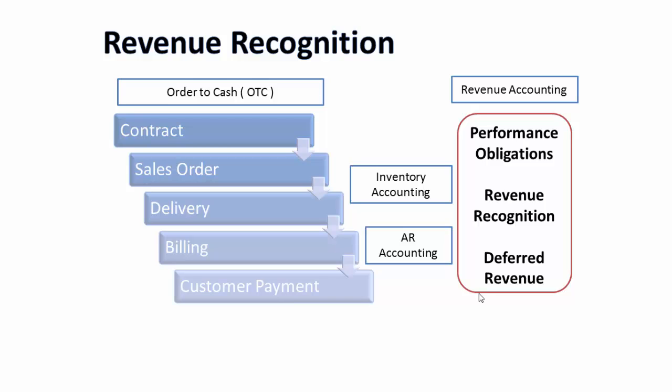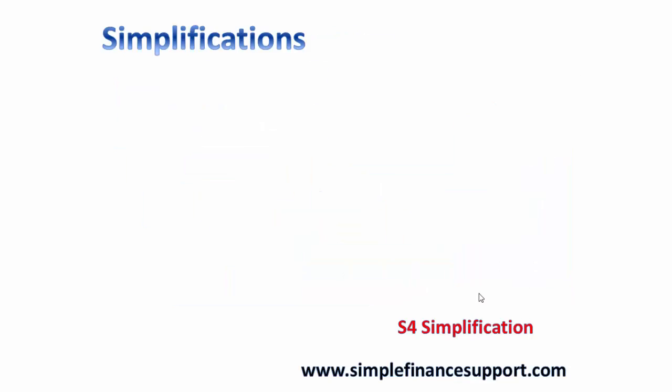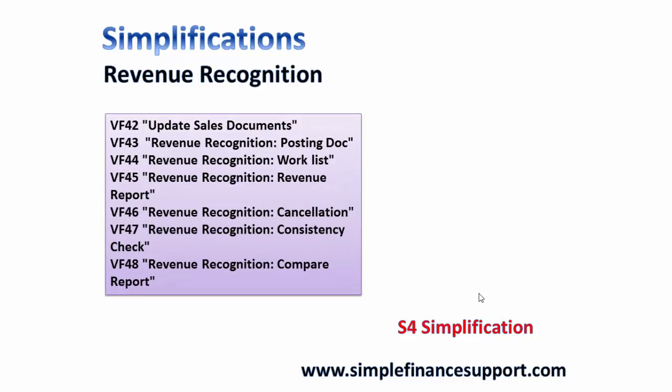This entire revenue recognition activity in SAP is currently performed as part of the Sales and Distribution module. There are transactions for updating the sales order, revenue recognition postings, a work list, and a couple of reports. These are the revenue recognition transaction codes in the SD revenue recognition module.